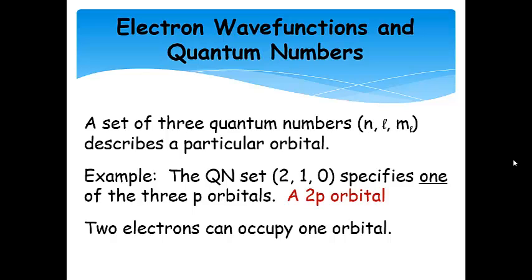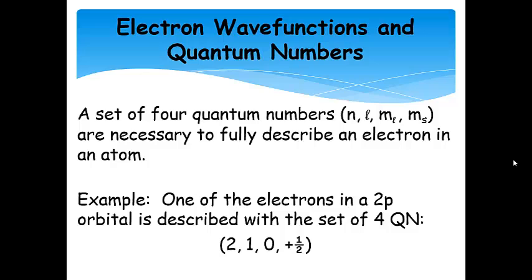Two electrons can actually occupy this orbital. In fact, two electrons can occupy any orbital. In order to fully describe an electron in an atom, we need a set of four quantum numbers that are unique to it.